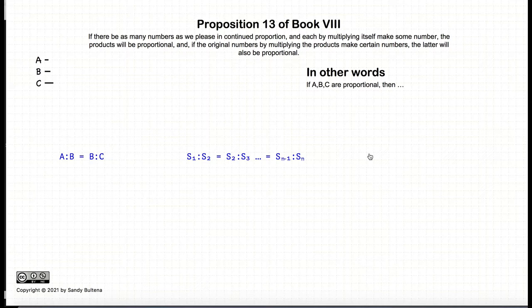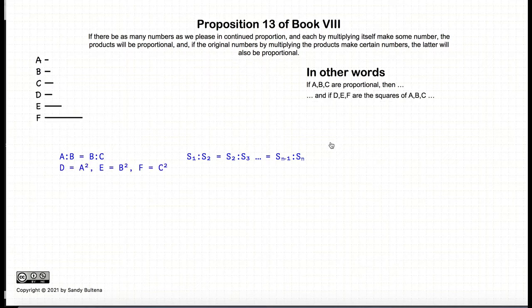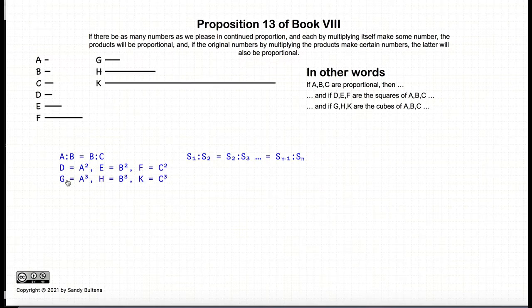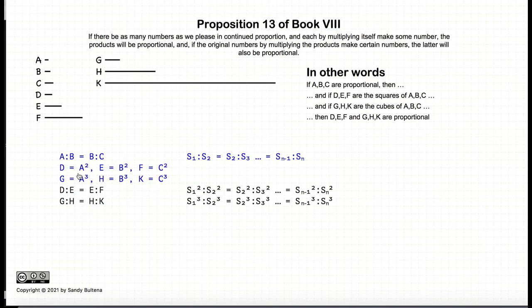In this proposition, it states that if we have a series of numbers that are in continuous proportion — so in other words, a:b = b:c, but it can be as many numbers as we would like — and if we take the squares such that d = a², e = b², f = c², and even take the cubes so that g = a³, h = b³, k = c³, then d:e = e:f. In other words, d, e, and f, which are the squares of a, b, and c, are also in continuous proportion, and g, h, and k, which are the cubes of a, b, and c, are also in continuous proportion.